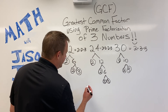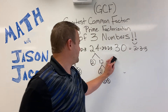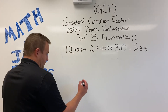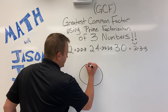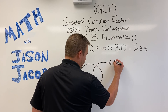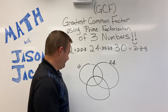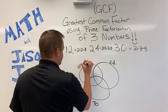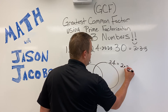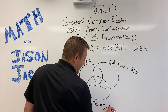Now we're going to make like Olympic rings. I'm going to go ahead and erase the factor trees and leave those prime factorizations up there. The first circle will represent 12, I'm going to overlap here, this circle will represent 24, and this circle will represent 30. I'm going to put the prime factorizations in: 12 is two times two times three, 24 was two times two times two times three, and 30 is two times three times five.